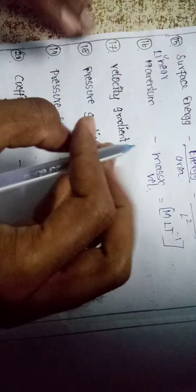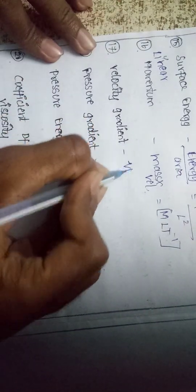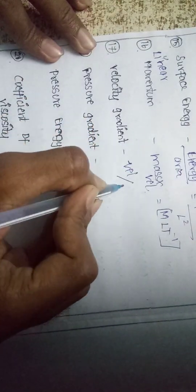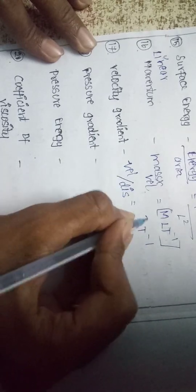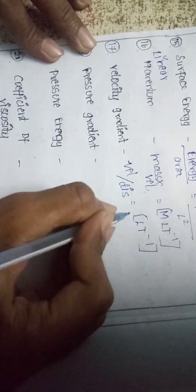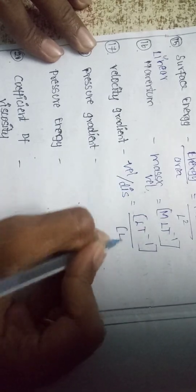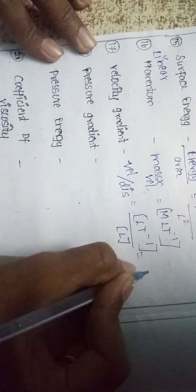Velocity gradient is velocity by distance — it is like a slope. Velocity is L T⁻¹ divided by L, so L cancels and velocity gradient is T⁻¹.